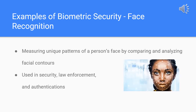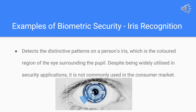There are many types of biometric security methods. The first is facial recognition, which measures the unique patterns of a person's face. It's used in security and law enforcement, but also as a way to authenticate identity and unlock devices like smartphones and laptops. The second method is iris recognition, which identifies the unique patterns of a person's iris — the colorful area of the eye surrounding the pupil.